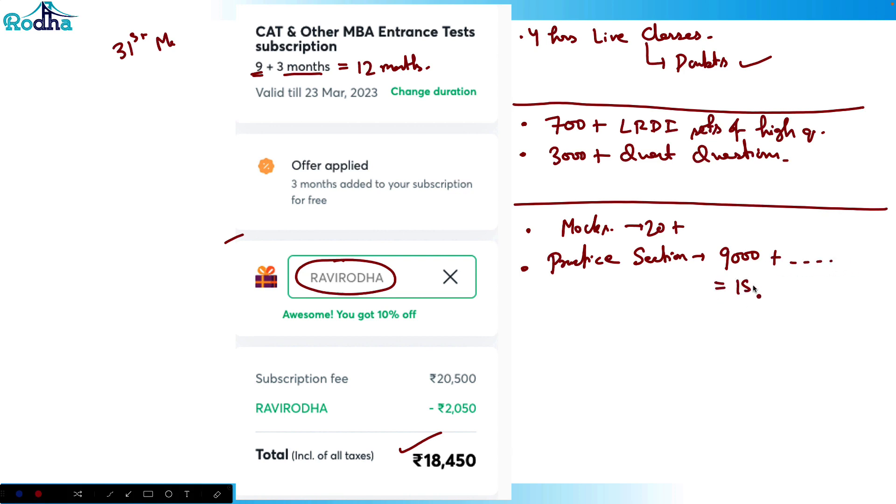So 9000 questions in quant plus in LRDI, I think total more than 15k questions are available in the practice section. So no book is required. Apart from that, there are top quality, top verbal faculties are there. So you can study verbal, so basically all in one subscription it works like Netflix. All you get in only one subscription. This offer is valid till 31st month, so you can use this. Thank you.